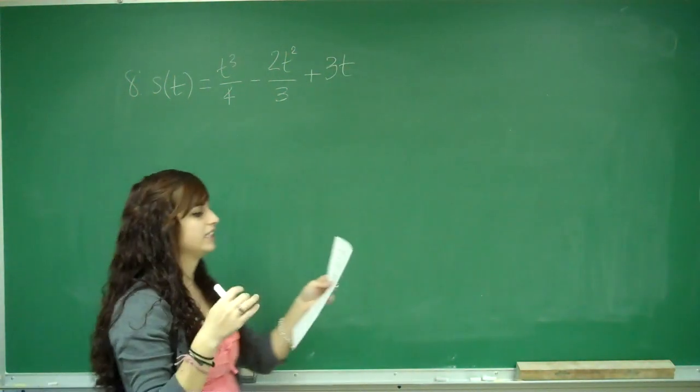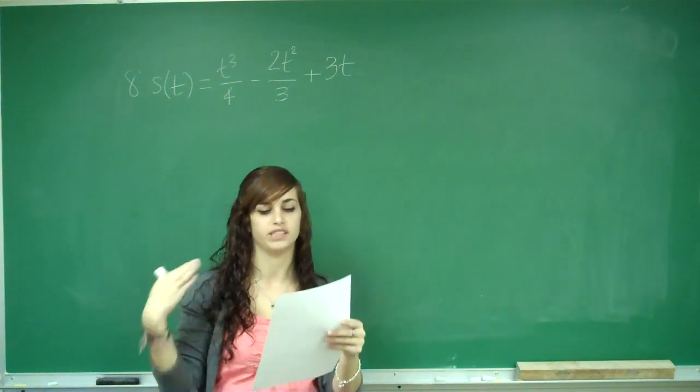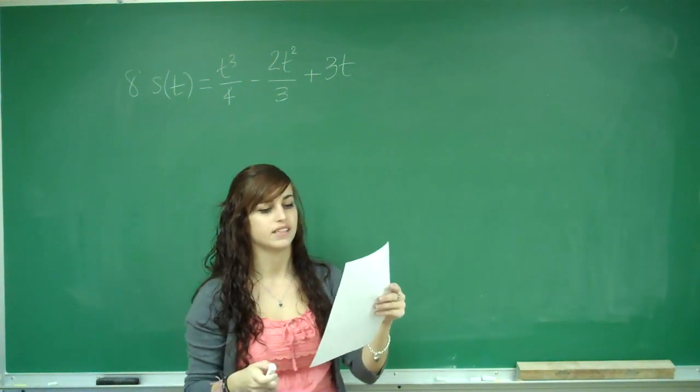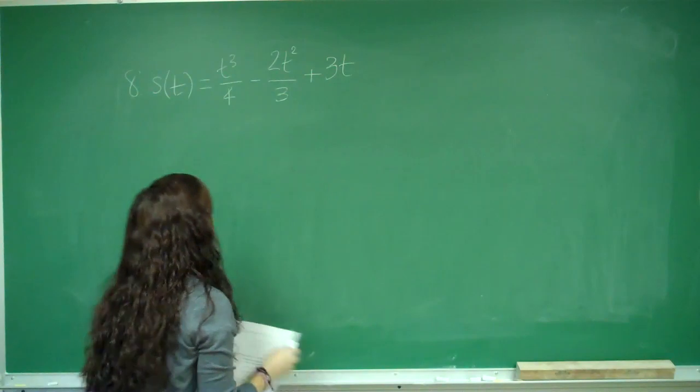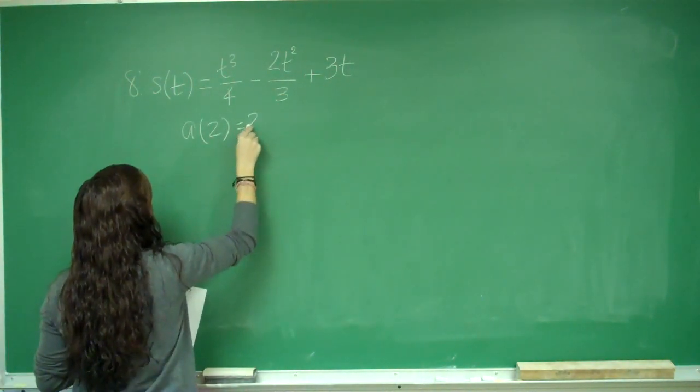Where S of t is the object's distance in meters from an observation point. So that means it's its position. And they want to find its acceleration after 2 minutes. So a of 2 equals question mark.